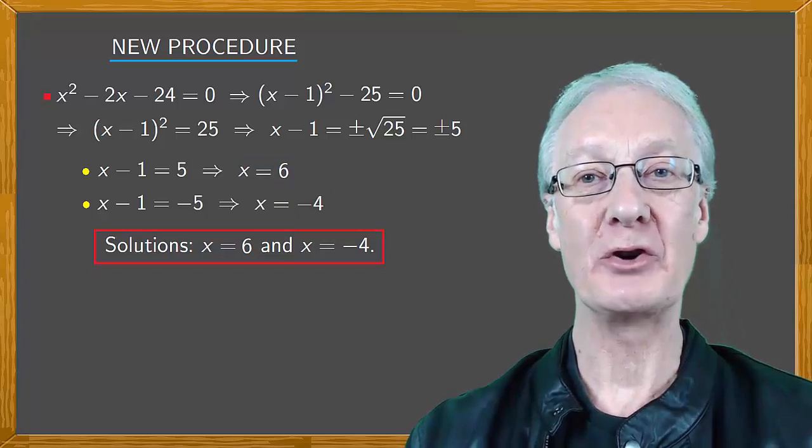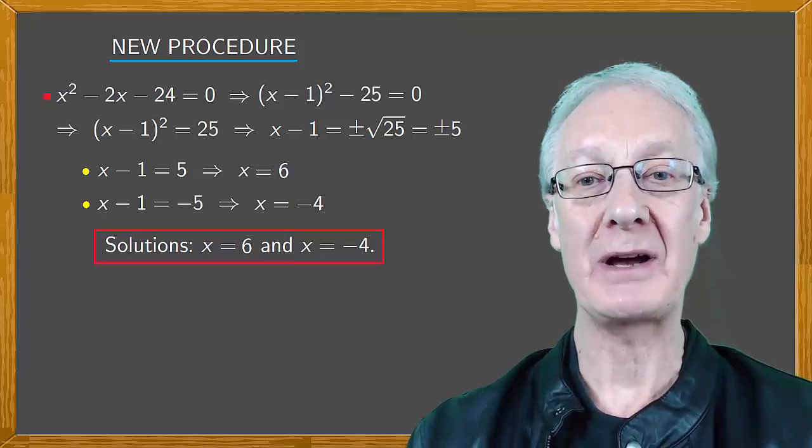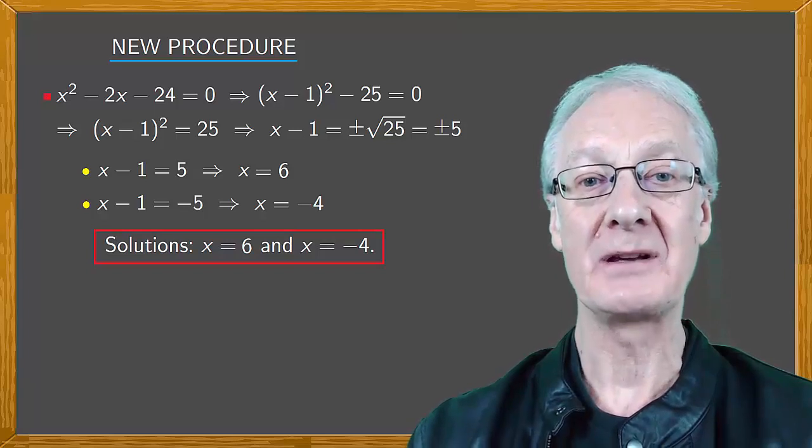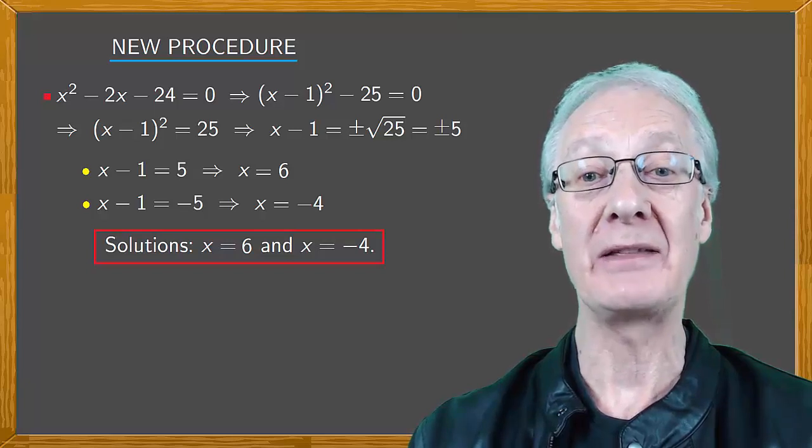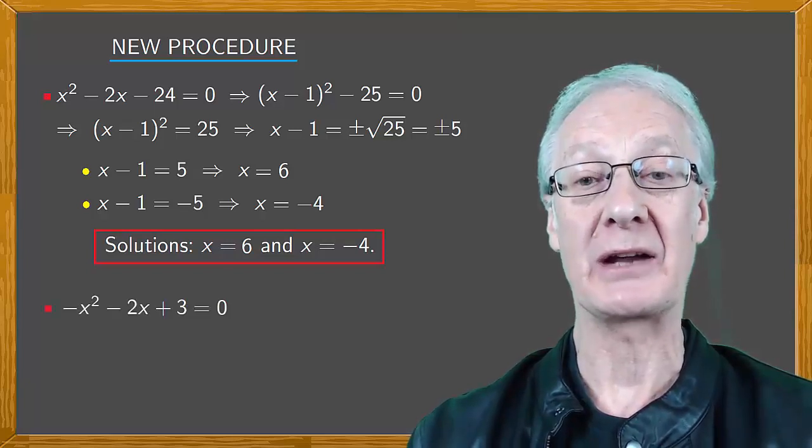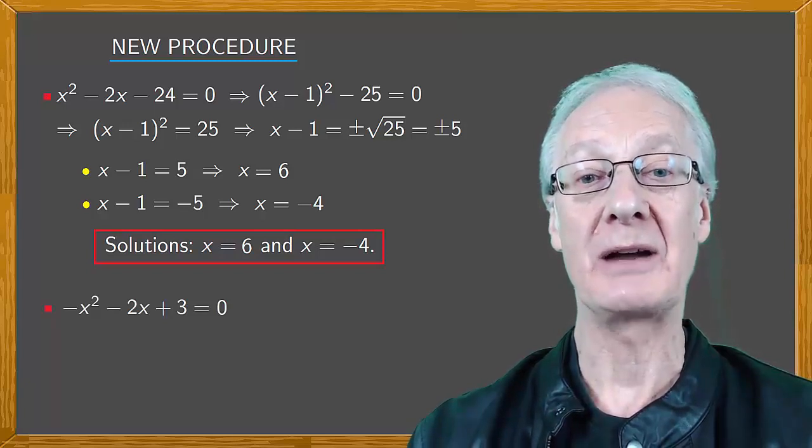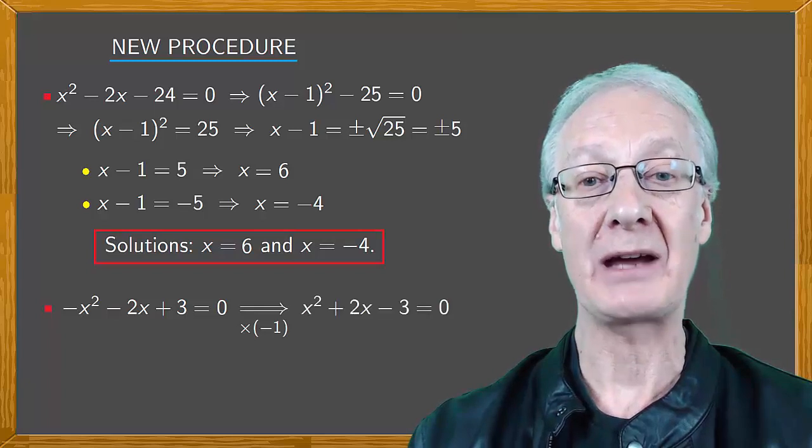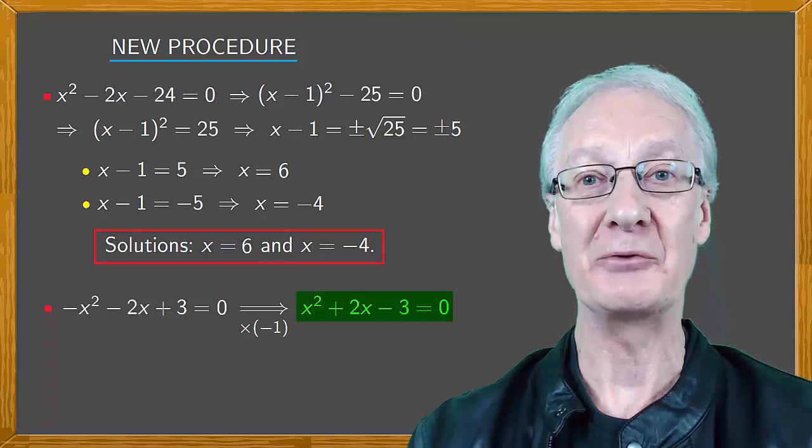A couple of points to note before applying the square root. If the coefficient of x squared is negative, so as not to have a problem with the root of the x squared term, multiply the entire equation by minus 1. For example, for the equation minus x squared minus 2x plus 3 equals 0, multiply everything by minus 1 to give x squared plus 2x minus 3 equals 0. And now apply the root.